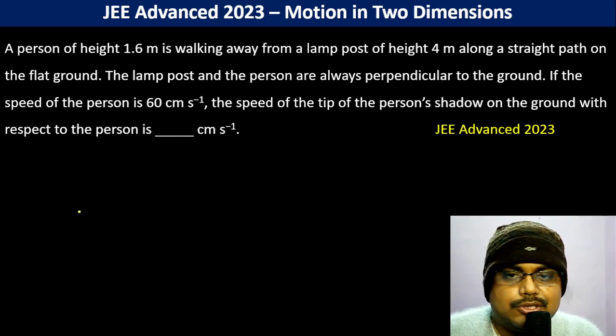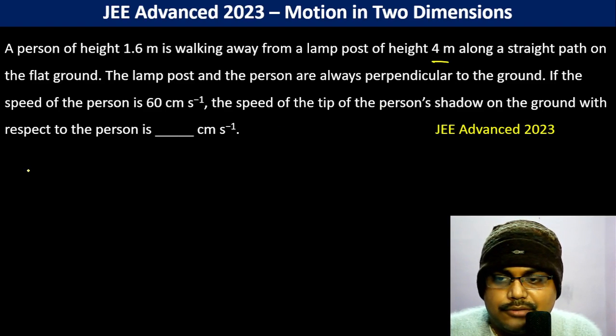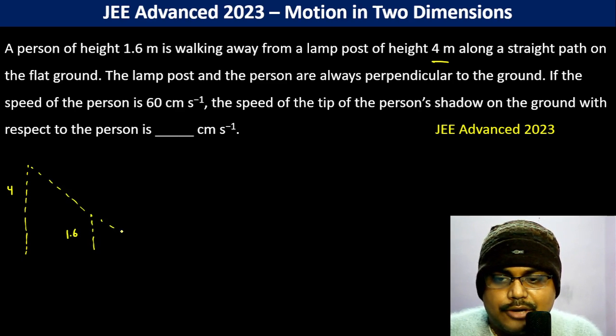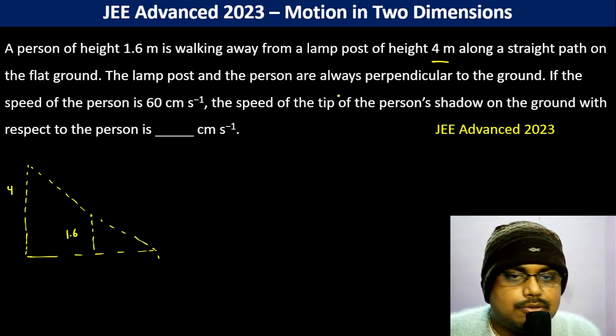A person of height 1.6 meters is walking away from a lamp post of height 4 meters along a straight path on the flat ground. This is the lamp post, 4 meters height, and this is the person which is 1.6 meters height. This is the shadow, and the lamp post and the person are always perpendicular.